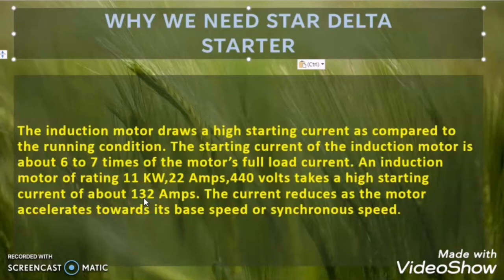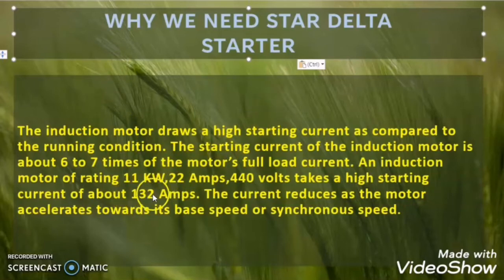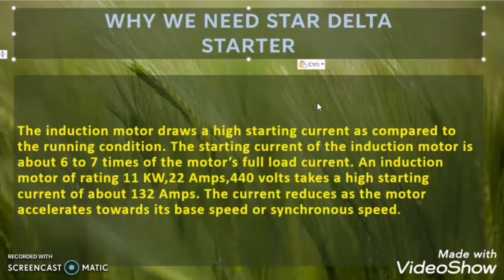Once we introduce the star delta technique, the motor will take only 3 to 4 times its full load current. So in this case, if the motor takes 3 times, the starting current reduces from 132A to 66A, which is comparatively very low. So the purpose of the star delta technique is to reduce the high inrush current which the induction motor draws at the time of starting.